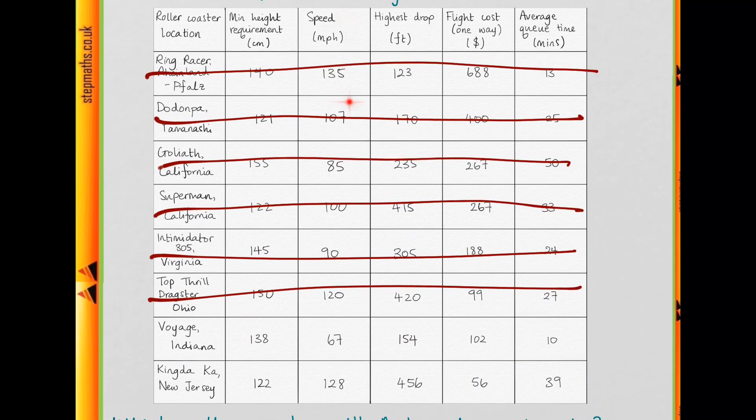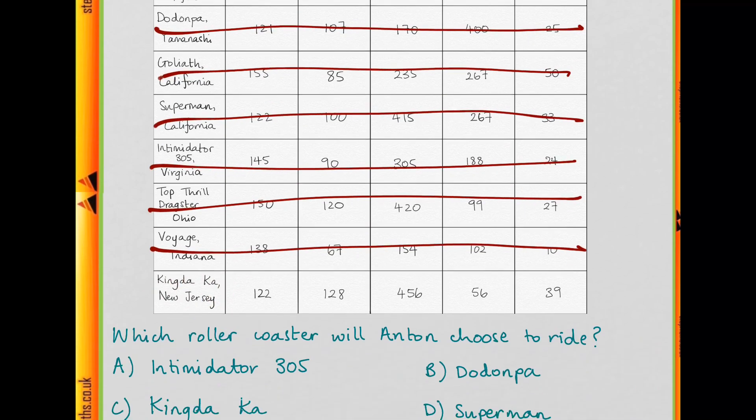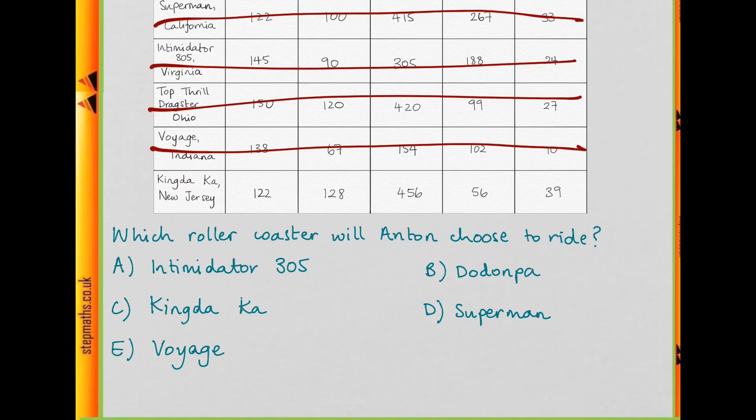It also has to reach at least 90 miles per hour. If we look at the speed of our remaining two roller coasters, the Voyage is not fast enough, so we get rid of that too. This means Anton is going to choose this roller coaster. Our answer is C.